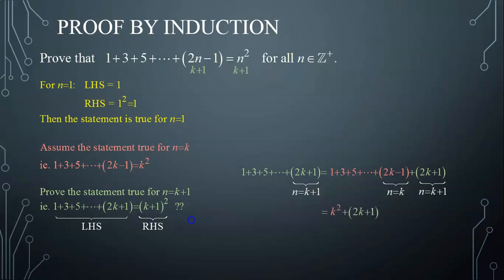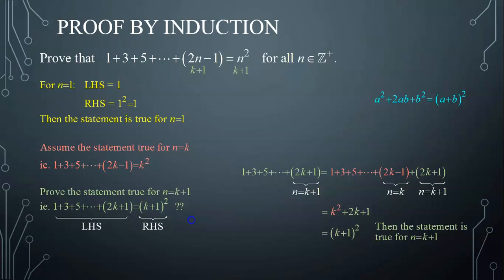Replacing the sum of the first k terms by k squared, and as this is a sum, the parentheses here can be ignored. We now have the left-hand side equal to k squared plus 2k plus 1, which is in the form a squared plus 2ab plus b squared. Then that is factorized into k plus 1 all squared, which is the right-hand side we were aiming to reach. Then the statement is true for n equals to k plus 1, given that it was assumed true for n equals to k.